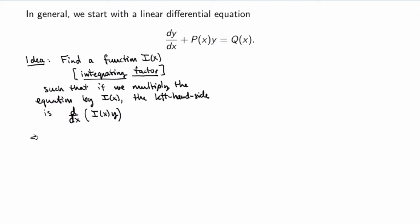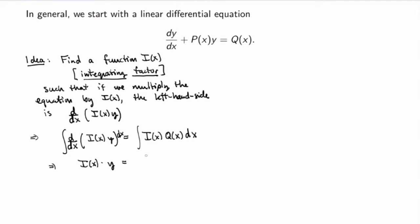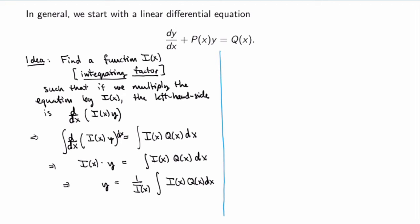If we multiply the equation by i, by definition the left-hand side becomes d/dx of i times y, and on the right-hand side we have i times q(x). Now we can integrate both sides with respect to x. On the left-hand side we evaluate the integral directly since it's an integral of a derivative, giving i times y. On the right-hand side the integral depends on the particular functions i and q, but given those functions we could evaluate it. Then we solve for y by dividing by i to get the general solution.